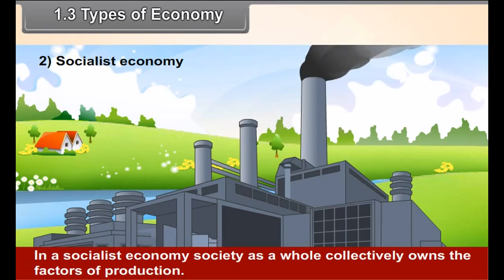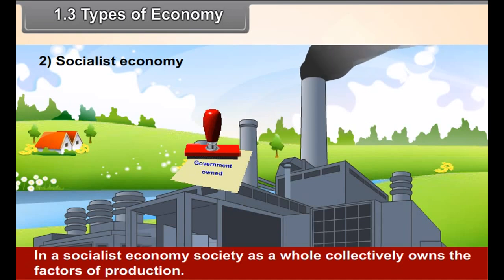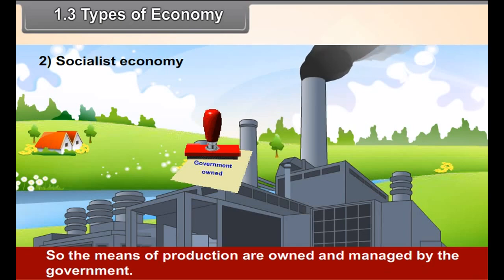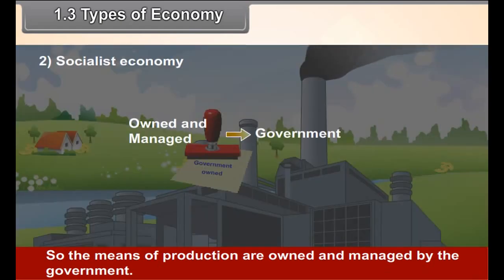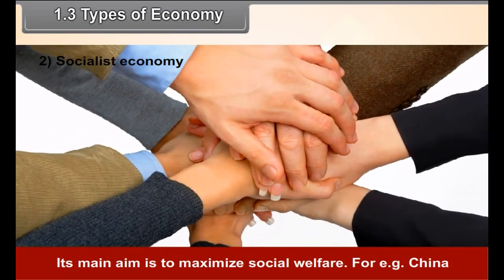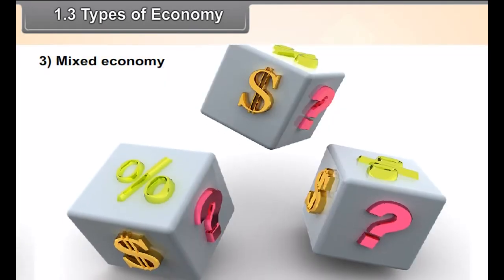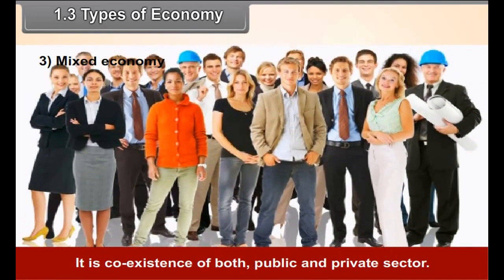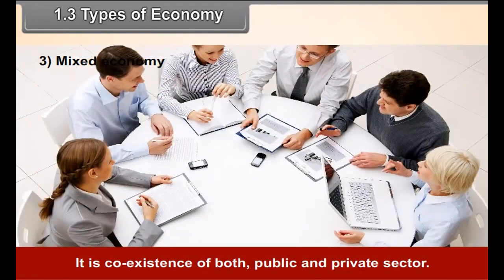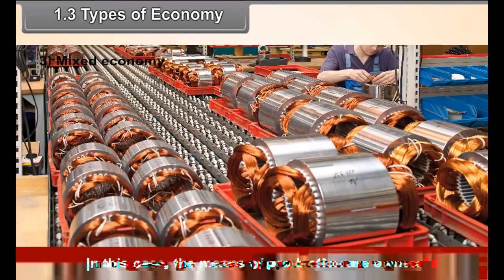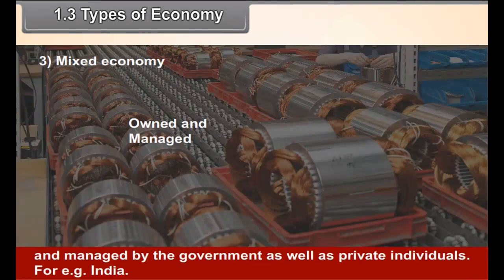In a socialist economy, society as a whole collectively owns the factors of production. So the means of production are owned and managed by the government. Its main aim is to maximize social welfare. For example, China. Mixed Economy is a co-existence of both public and private sector. In this case, the means of production are owned and managed by the government as well as private individuals. For example, India.